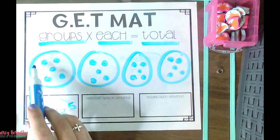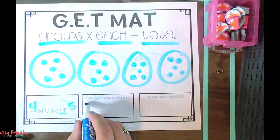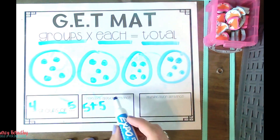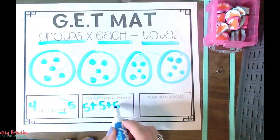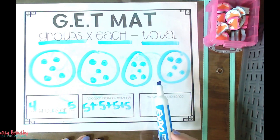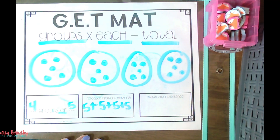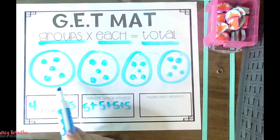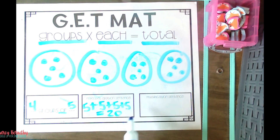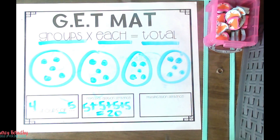Now it's time for us to write our repeated addition sentence. How many do we have in the first circle? Five. Plus five in the second, plus five in the third, plus five in the fourth. We find the total by adding five plus five plus five plus five, which equals five, ten, fifteen, twenty. Then I show them how they can simplify this repeated addition sentence by writing a multiplication sentence.